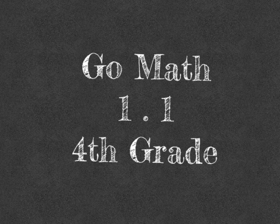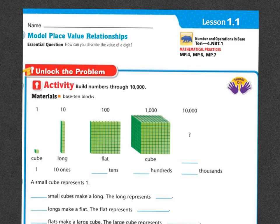Good morning fourth graders. Today's lesson is 1.1. Today we are going to model place value relationships. Our essential question: how can you describe the value of a digit? Let's unlock the problem. Activity: build numbers through ten thousand.